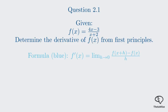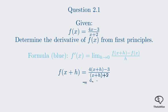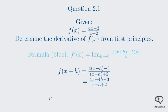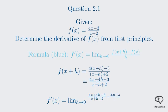Our first step is to calculate f of x plus h by substituting x plus h into our function. We replace every x in the original function with x plus h. This gives us 4 times the quantity x plus h minus 3, divided by the quantity x plus h plus 2. Now we substitute f of x plus h and our original f of x into the first principles formula, giving us a complex fraction.